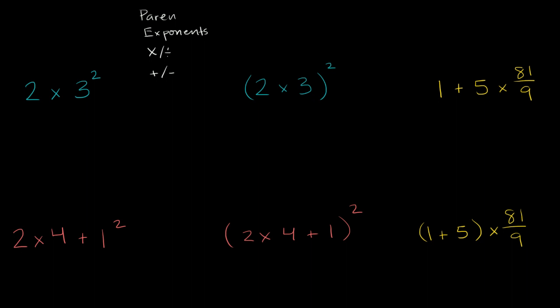So in this expression right over here, there are no parentheses. So we do the exponents first. So we calculate what 3 squared is. 3 times 3 is 9. So this becomes 2 times 9, which is equal to 18.